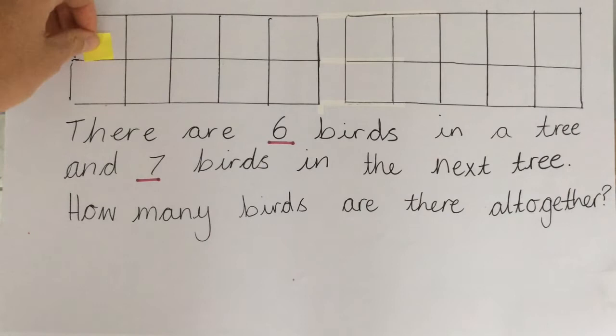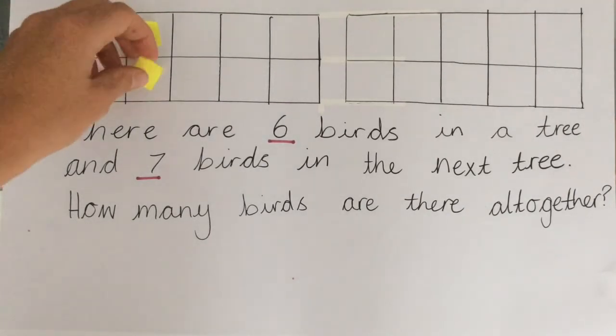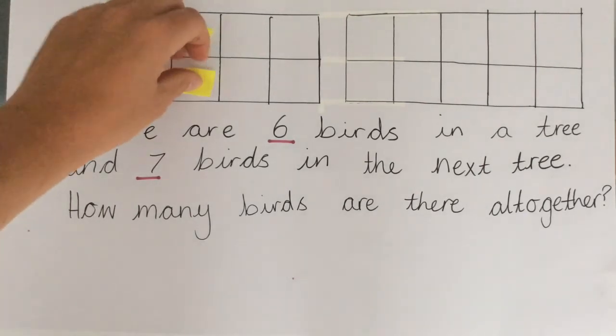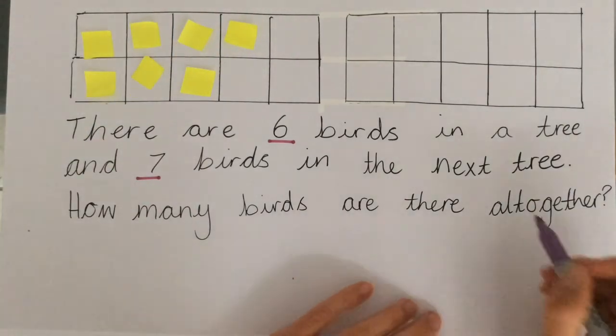So let's count the largest amount first. So seven, one, two, three, four, five, six, seven. So that's the seven birds.